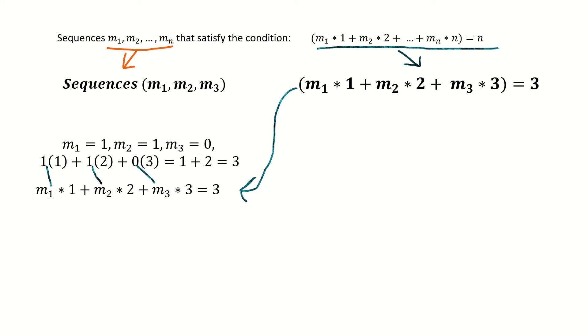Another sequence of m's that satisfy the condition when n equals 3 would be m1 equals 0, m2 equals 0, and m3 equals 1. You can see how this sequence satisfies the condition below.